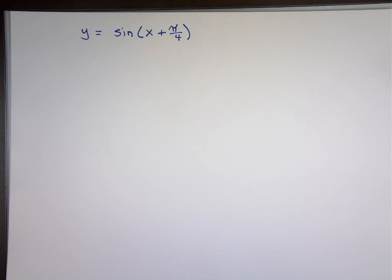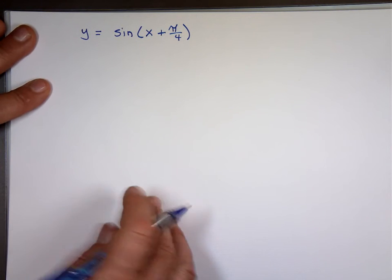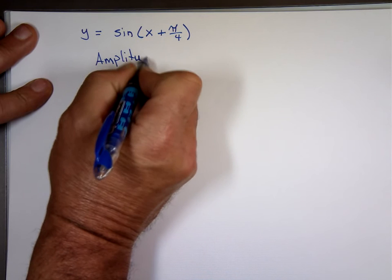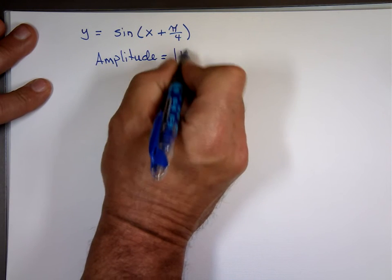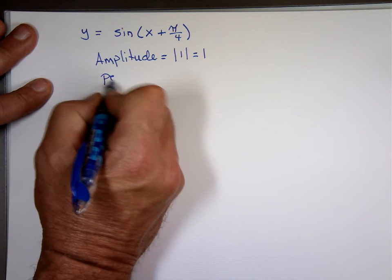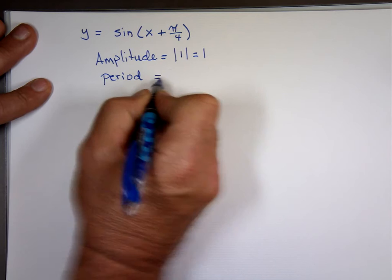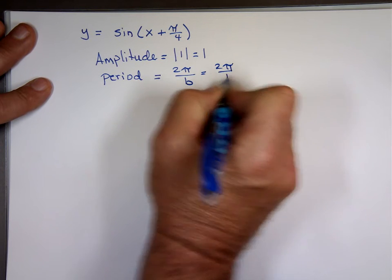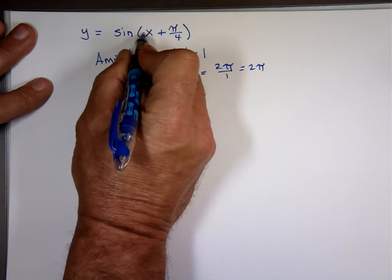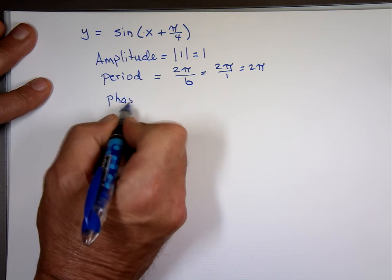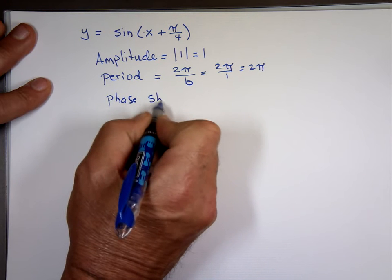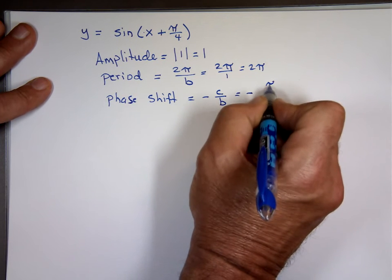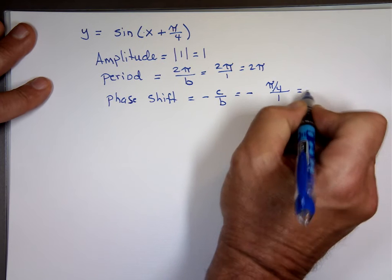Is it going to be shifted to the right? To the left — even negative. Well, let's see. Amplitude equals the absolute value of 1, which is 1. The period is going to be 2π divided by B, and what's B here? 1 — that's 2π. And the phase shift or displacement is negative C over B, which is negative π over 4 divided by 1, which is negative π over 4.